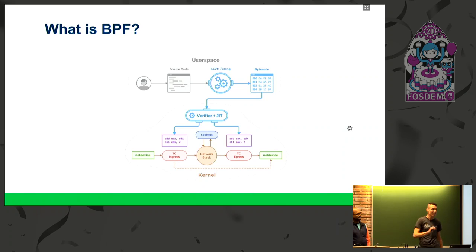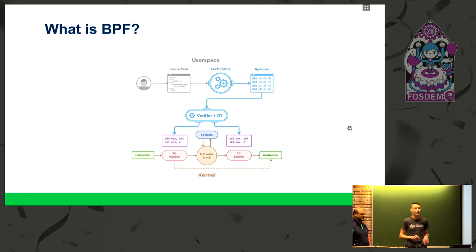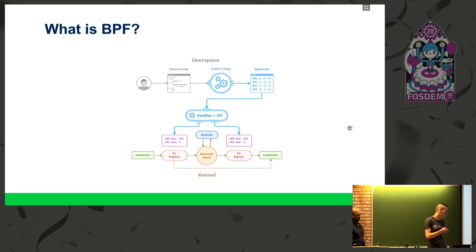But there is one technology which tries to address that — BPF, which was already mentioned in previous presentations. To briefly introduce it: it's a virtual machine in the kernel which allows you to write programs in a subset of C language, which filters and traces packets in the kernel, or can also be used to trace kernel function calls. In the case of Cilium, we focus more on the networking side of BPF.